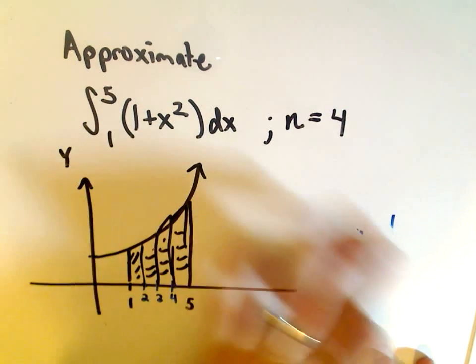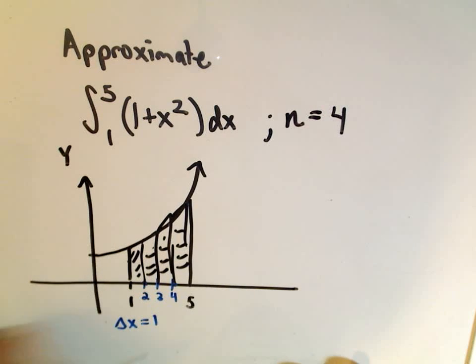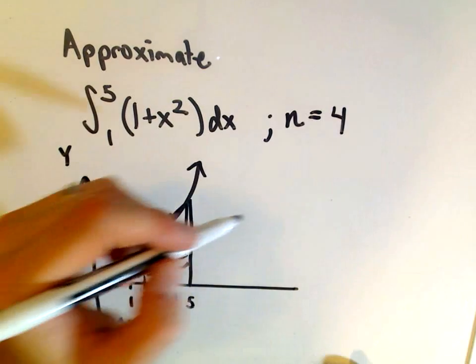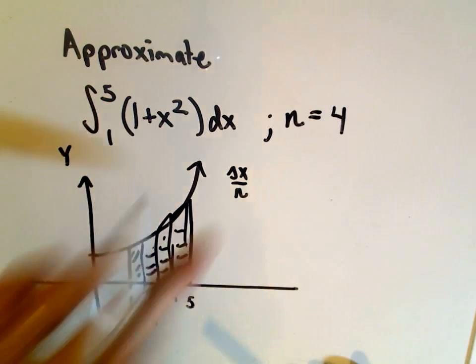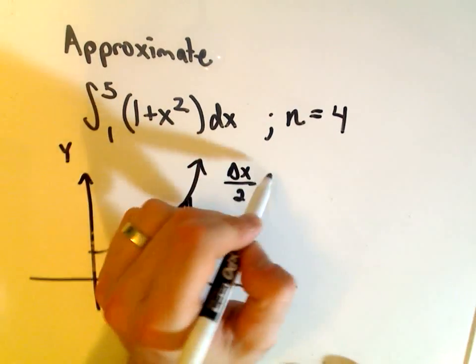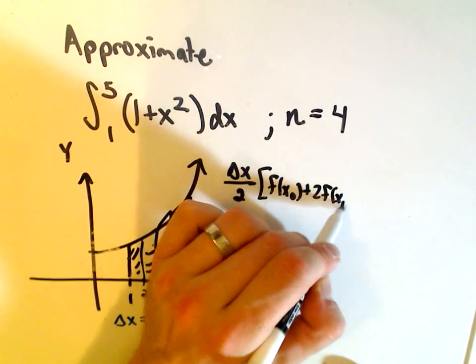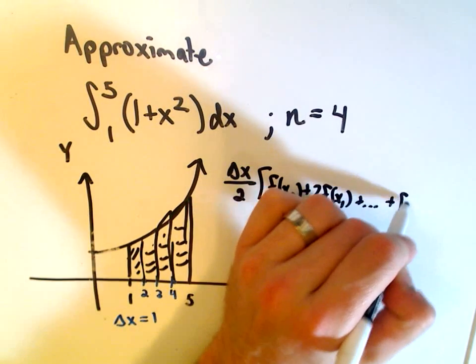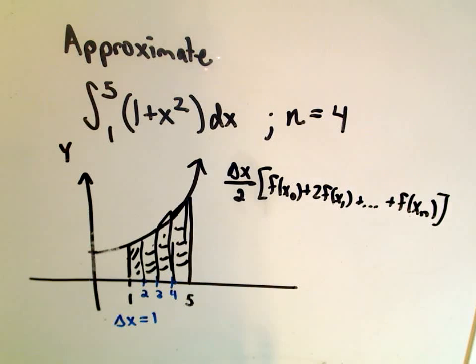So it says according to this formula here, again we know value delta x is 1 in this case. It says, our formula, it says we take delta x over 2. And then we multiply that by f of x of 0. We multiply the next ones by 2 until we get to the very last one, which only has a 1 attached to it as well.